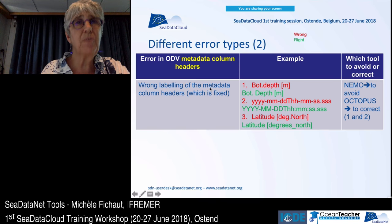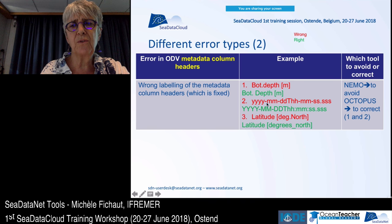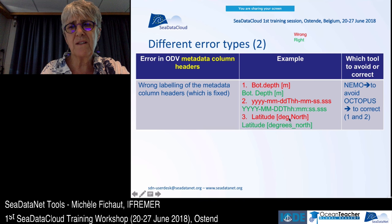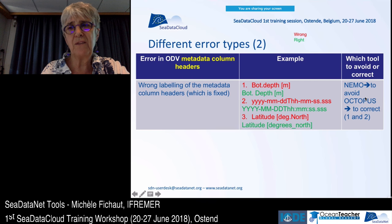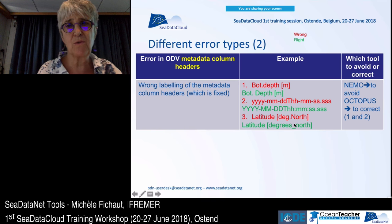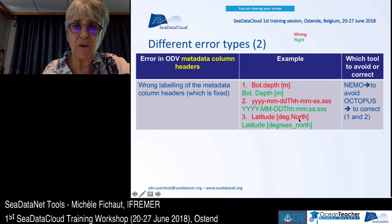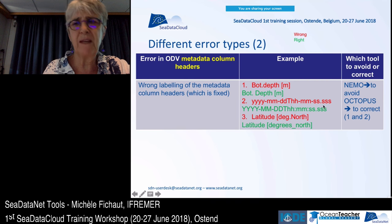We also found errors in metadata column headers. For example, wrong labeling of fixed metadata columns, like 'BottomDepth' written without a blank character between 'Bottom' and 'Depth' — but this is corrected on the fly by NEMO. Similarly, lowercase letters for Year, Month, and Day where capital letters are required — corrected by Octopus and avoided by NEMO. A wrong unit format that doesn't correspond to the format description won't be corrected by tools and must be fixed manually.